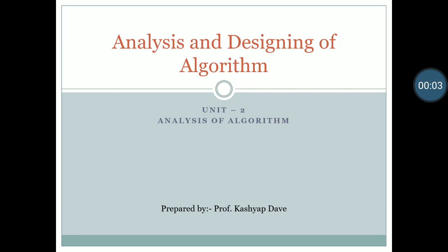Hello students, welcome back to another video lecture of ADS subject. Previously we studied asymptotic notations — specifically Big O notation and Omega notation. Big O notation is used for worst case time complexity of an algorithm and suggests the upper bound. Omega notation is used for best case and suggests the lower bound of your algorithm.